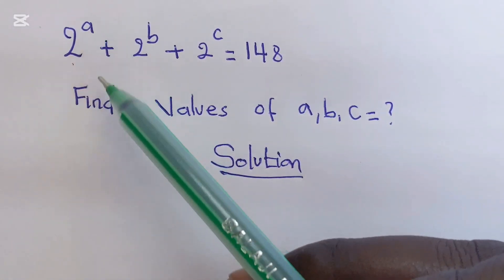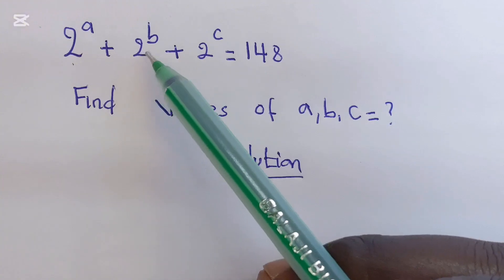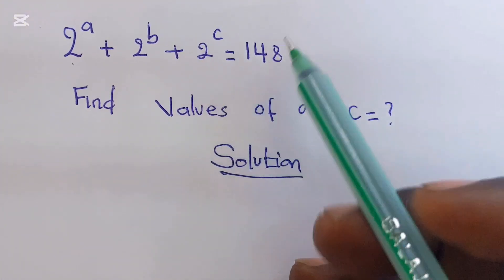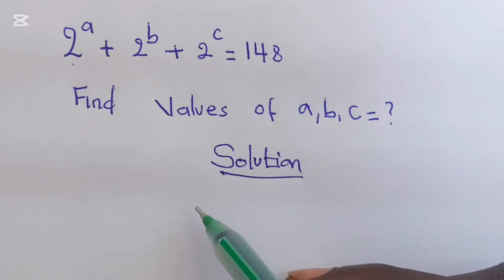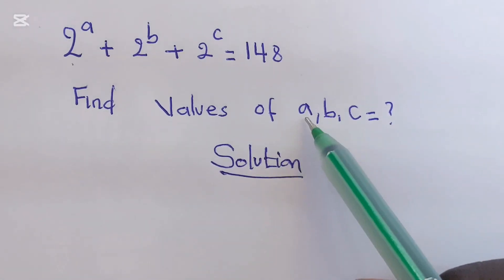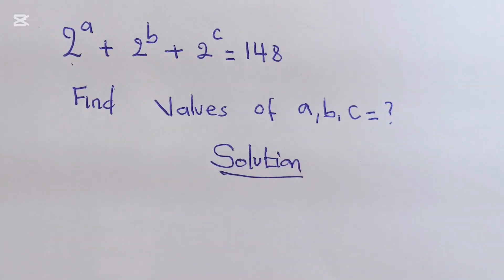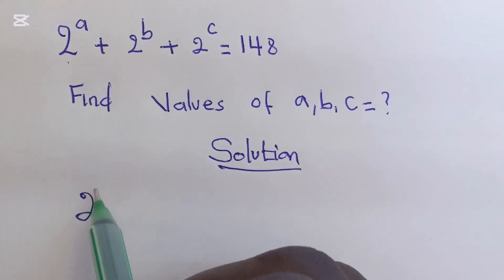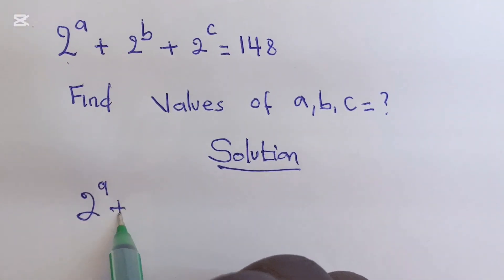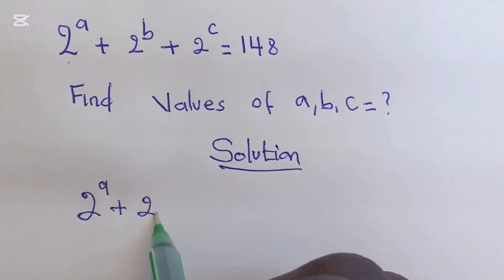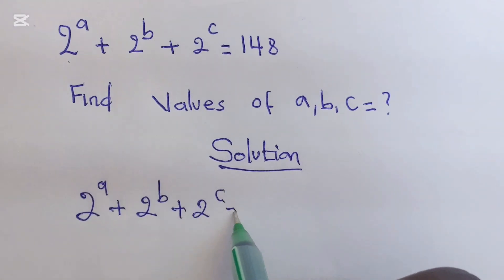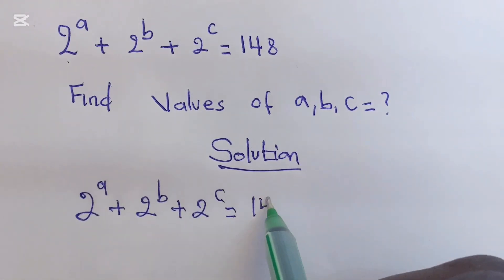Here we have 2 to the power of A plus 2 to the power of B plus 2 to the power of C, which equals 148. We are asked to find A, B, and C. Let's copy what we have: 2^A + 2^B + 2^C = 148.